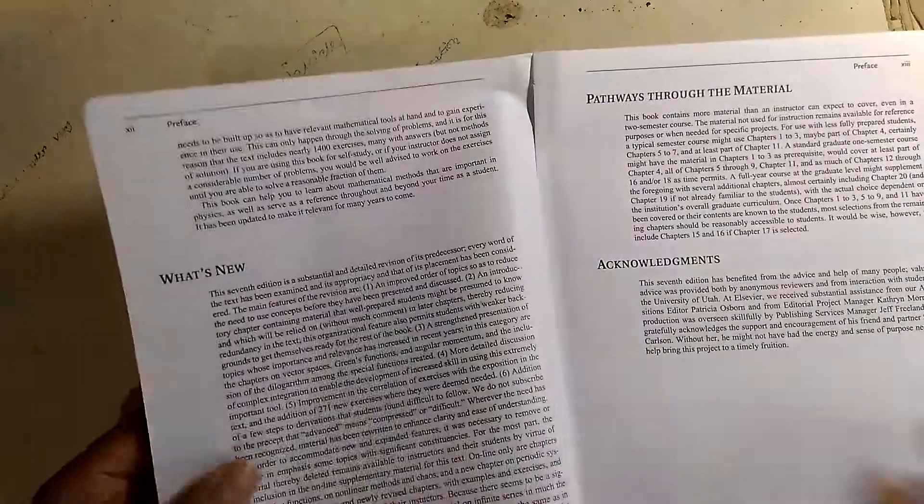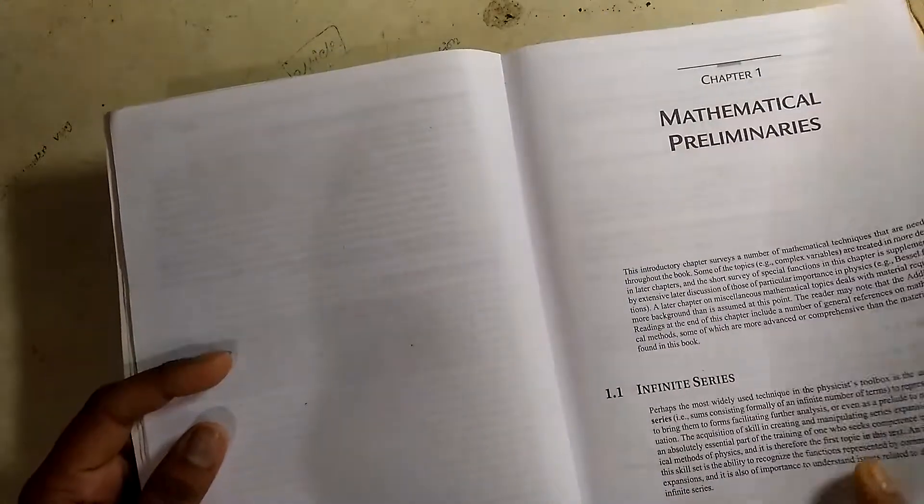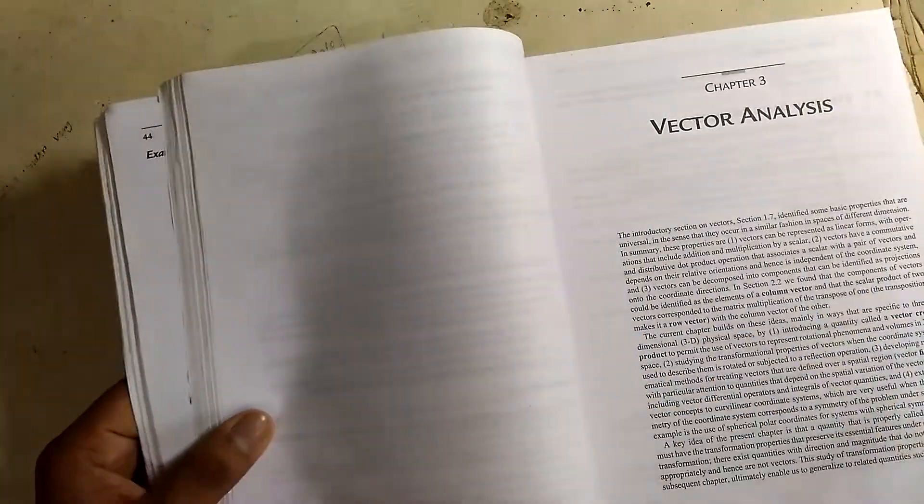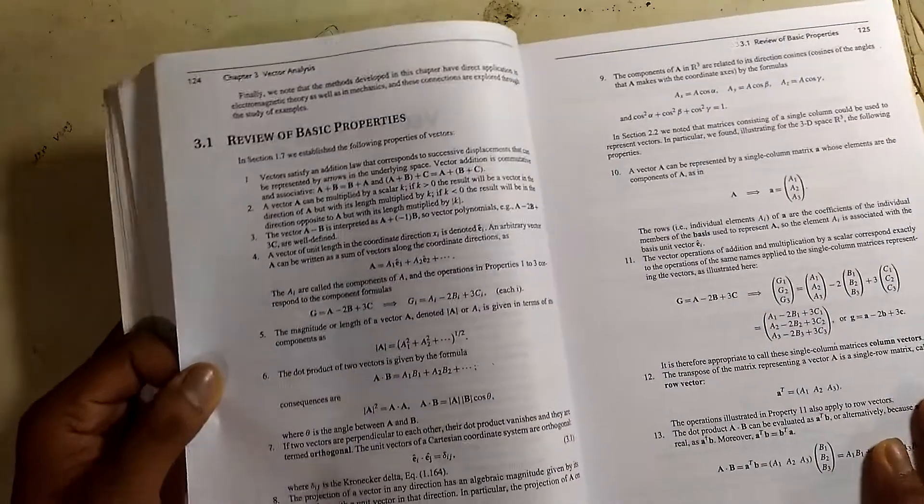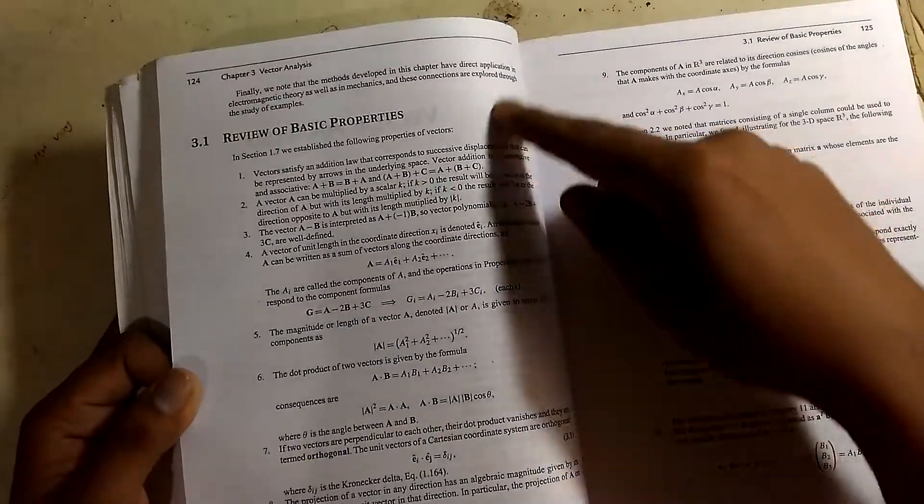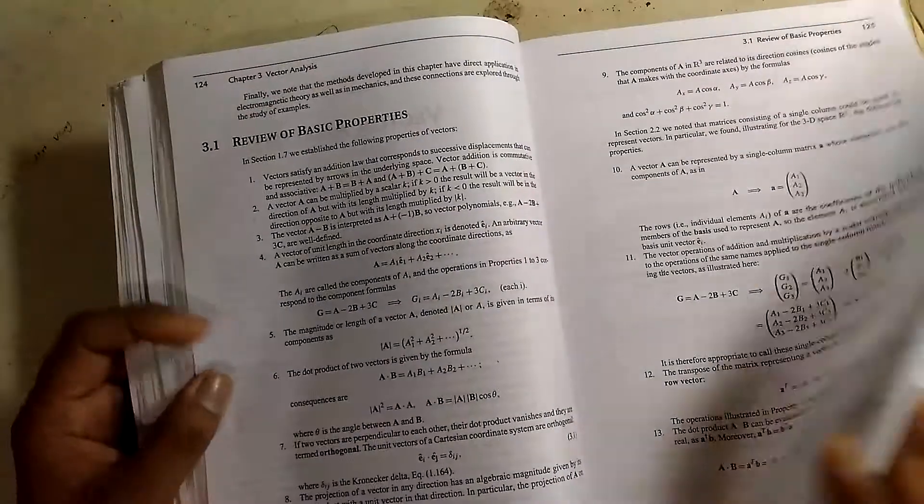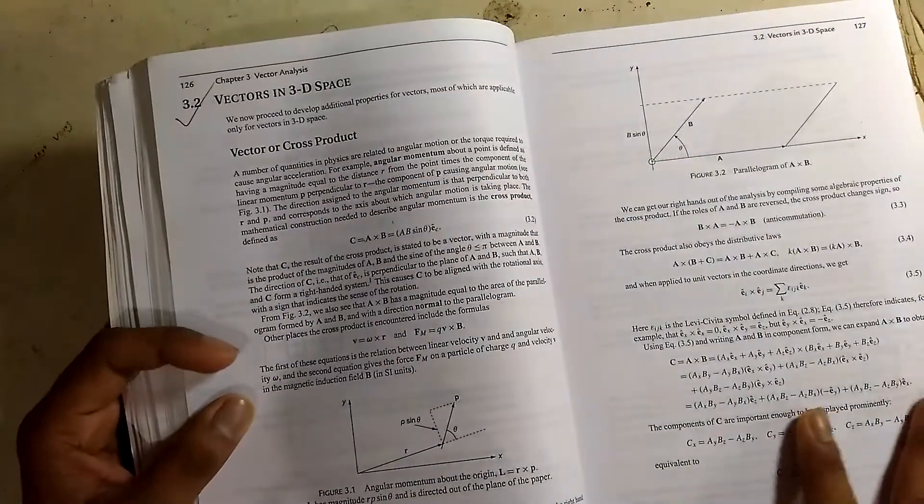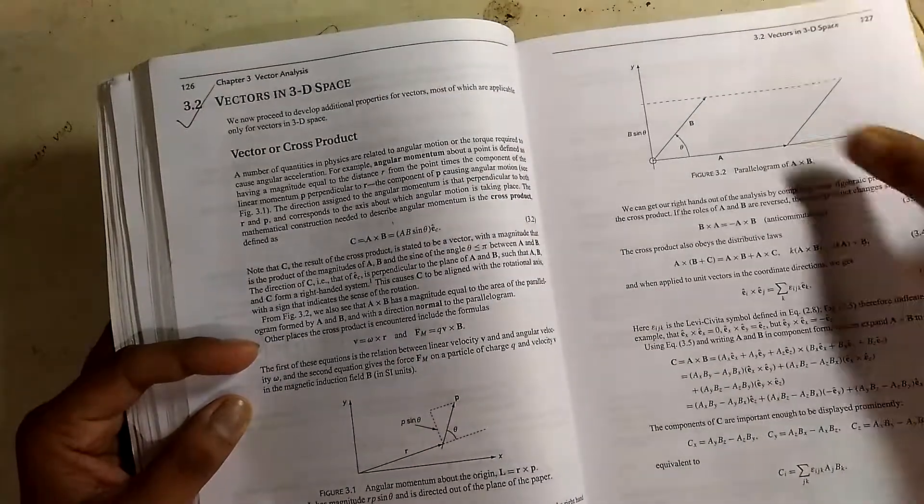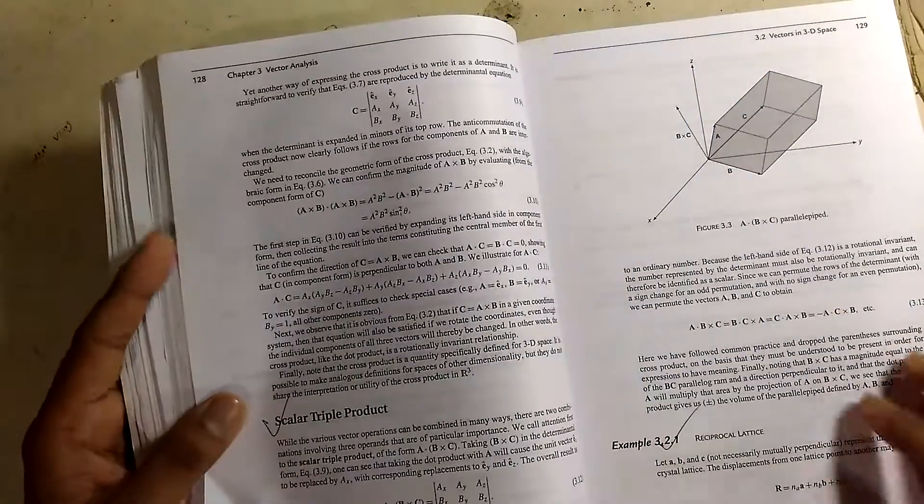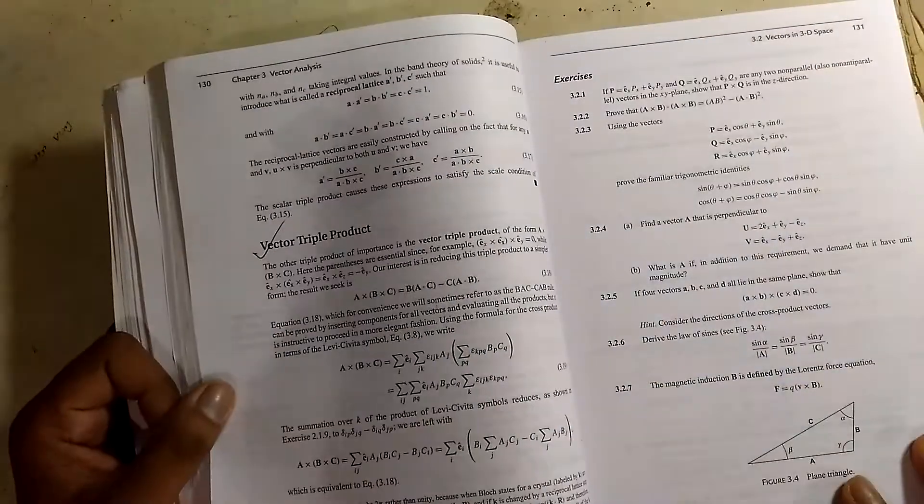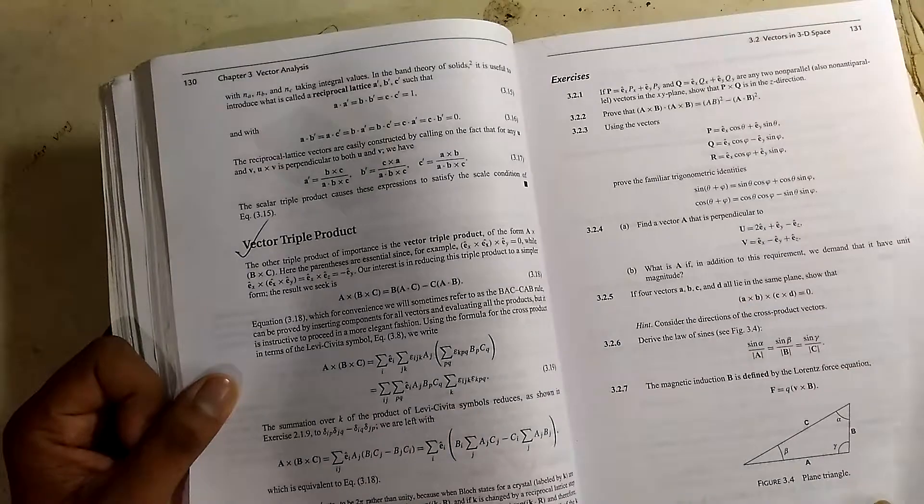Now I am going to show you some of the details of the chapters. Let's say vector analysis. As you can see, there are lots of basics covered in this book - three-dimensional space, cross product. There are some nice pictures drawn here.